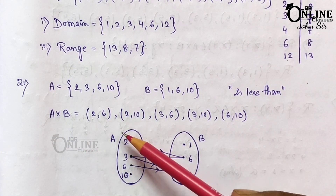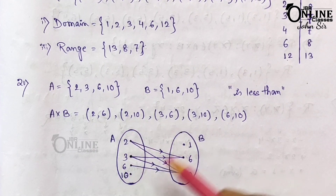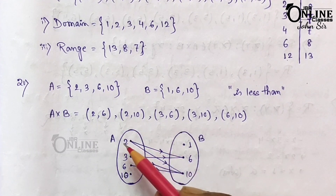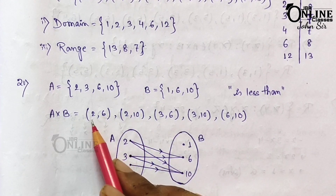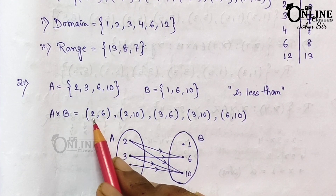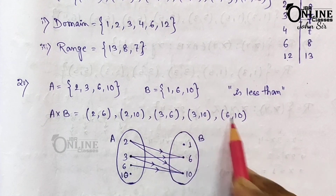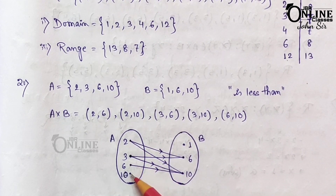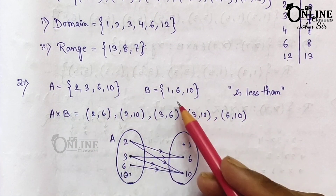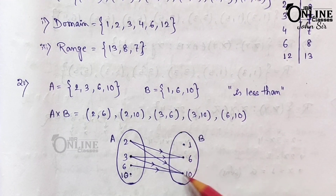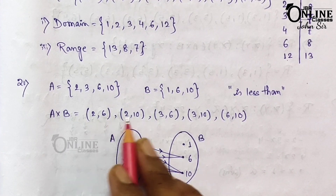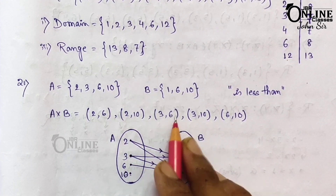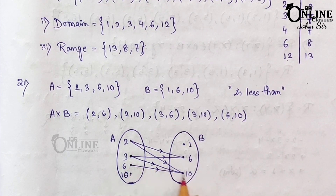Also represent this relation by an arrow diagram. Draw two ovals, first one A and second one B. Write elements of A: 2, 3, 6, 10, and elements of B: 1, 6, 10. Then draw arrows from 2 to 6, 2 to 10, 3 to 6, 3 to 10, and 6 to 10 to show the 'less than' relation.